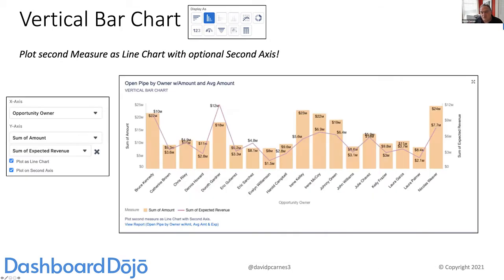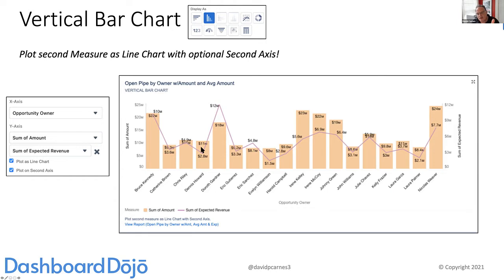Another thing you can do with a vertical bar chart is add a second axis. We can plot a second measure as a line chart and have a second axis over on the right if we wish. You have to have the same data types — though I might use a row-level formula to make an amount look like a record count just to take advantage of the ability to combine a bar with a line. This is the vertical bar with a second axis.